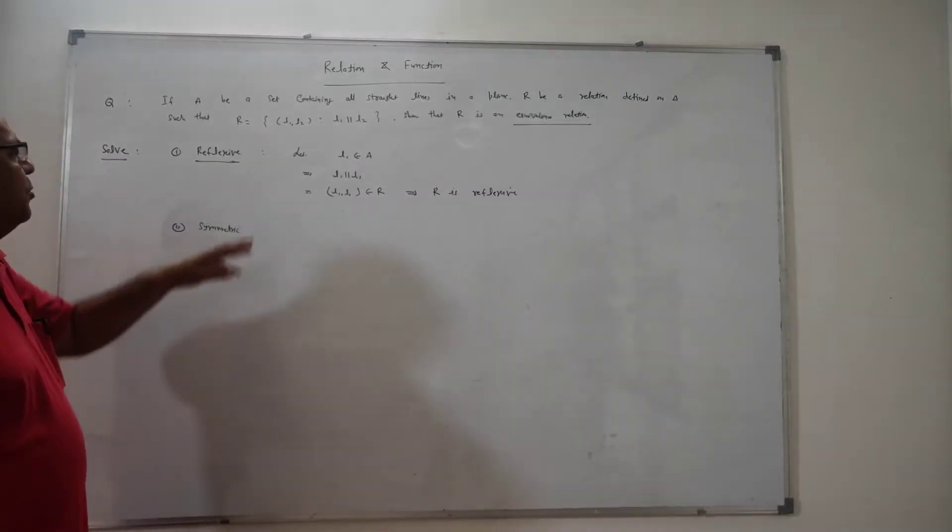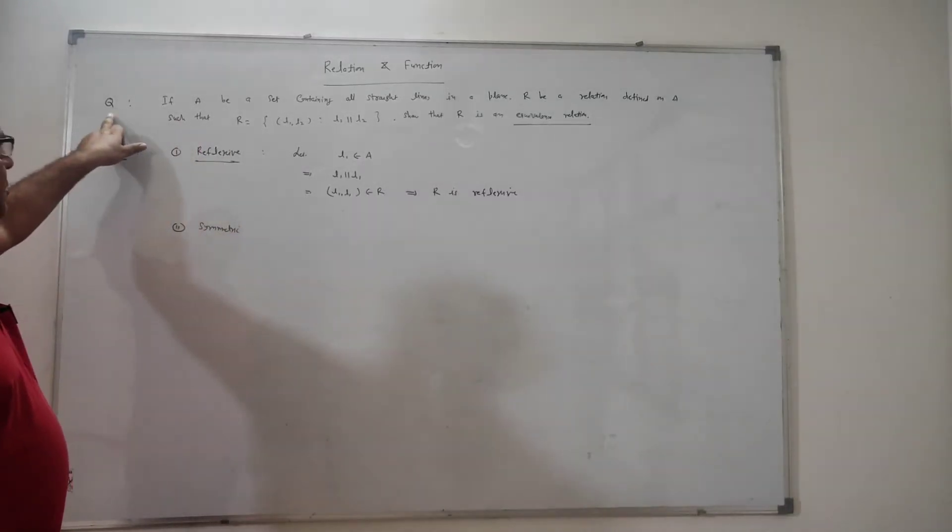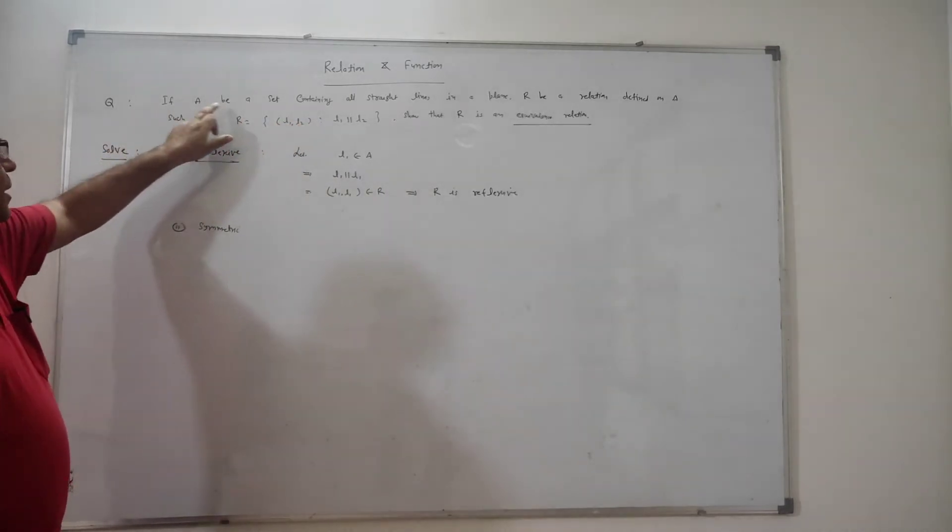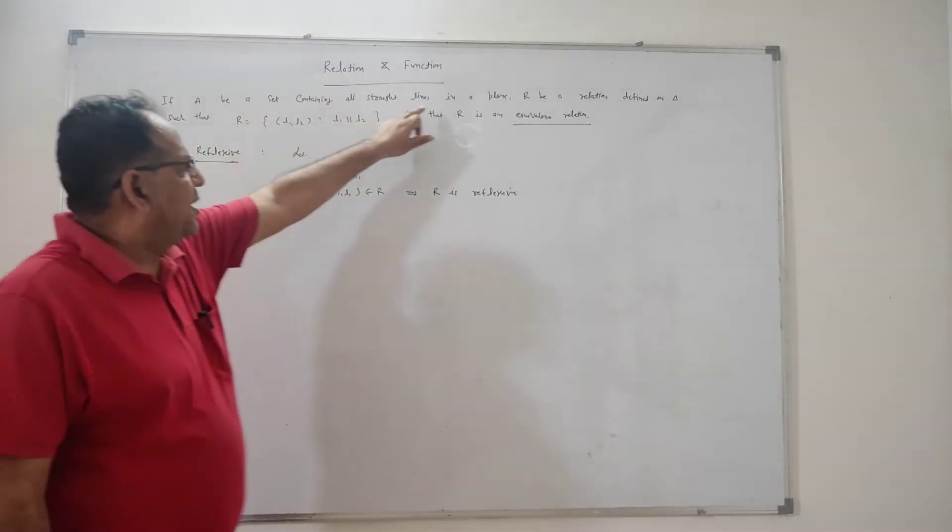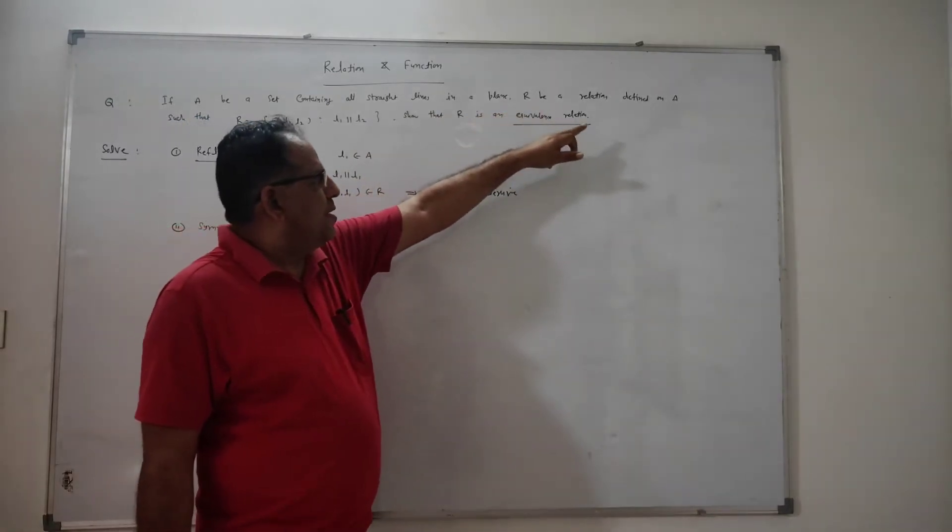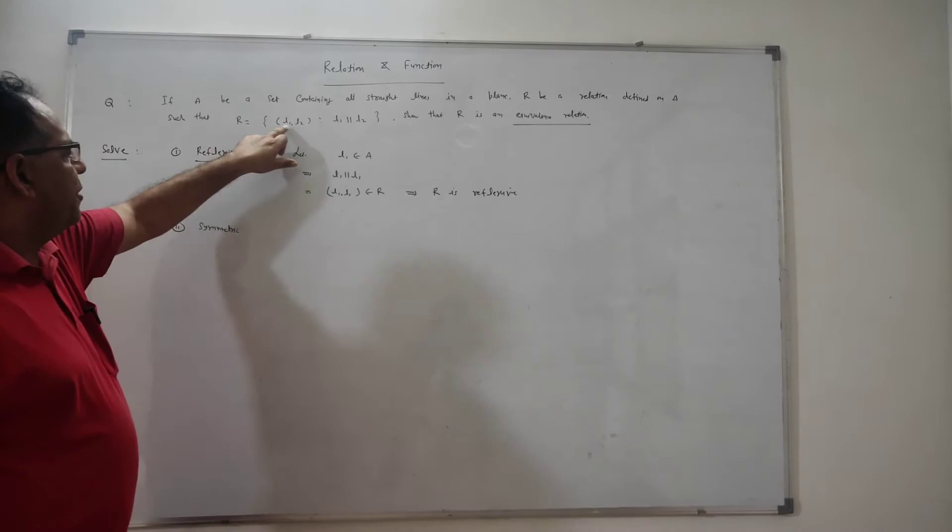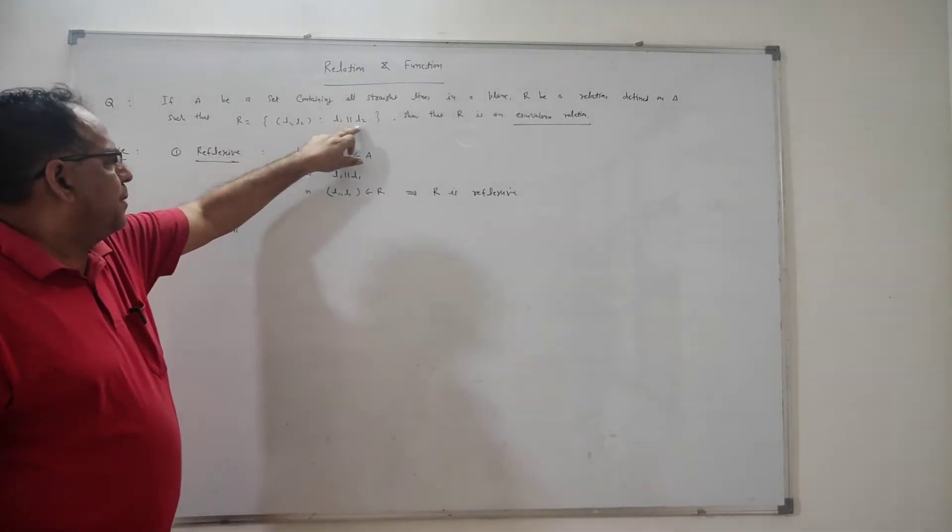In this part of the video, we are taking some questions based on relations. The first question is: if A is a set containing all straight lines in the plane, R is a relation defined on set A such that R equals ordered pairs (L1, L2) where L1 is perpendicular to L2.